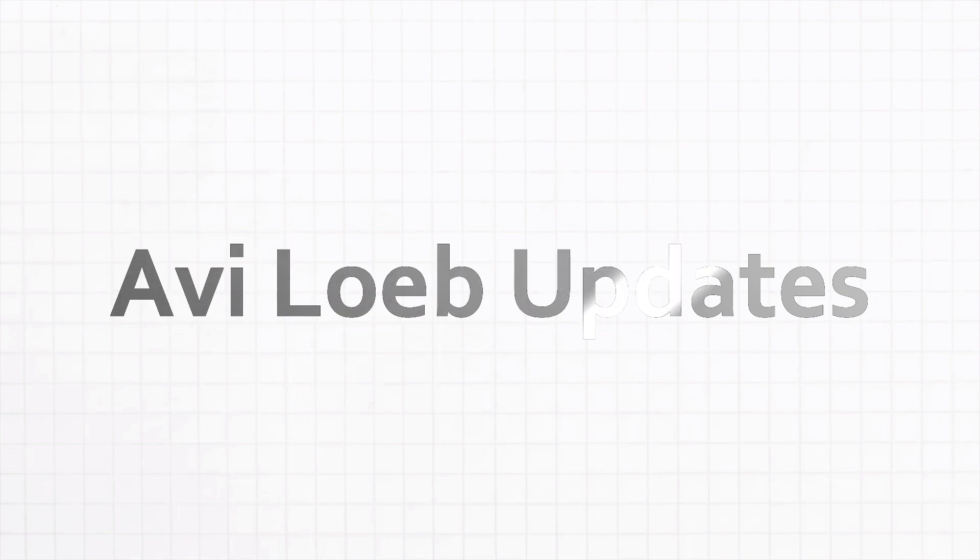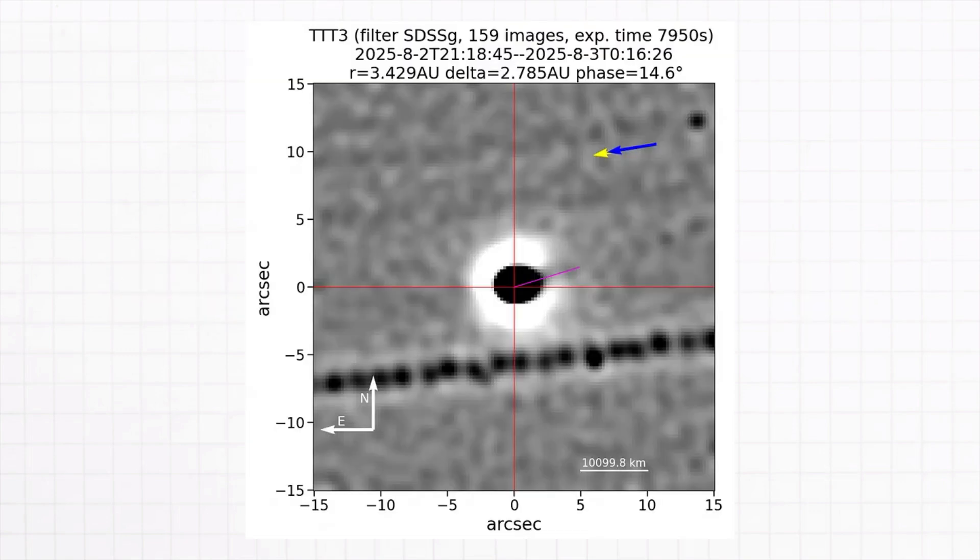Avi Loeb updates: A new image of the interstellar object 3I Atlas from the 2-meter Twin Telescope in the Canary Islands, Spain. The image, composed of 159 exposures of 50 seconds each, was taken on August 2, 2025.